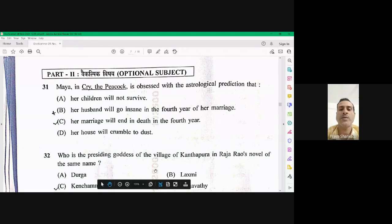Today we are going to analyze the question paper of English literature conducted by UPHEAC on 28th of November 2021. So we are going to start with question number 31.